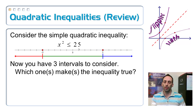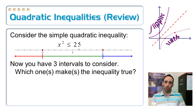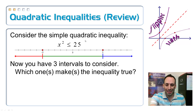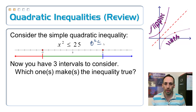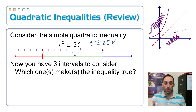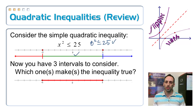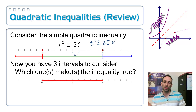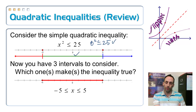Let's look at the flip side: if x² ≤ 25. If I plug 0 in this time, I get 0² ≤ 25, and it checks out. So the middle part is what I want — everything in between −5 and 5. That's −5 ≤ x ≤ 5, and it's an and inequality.